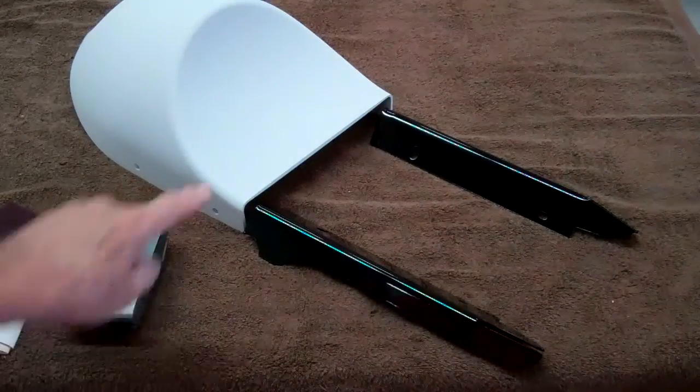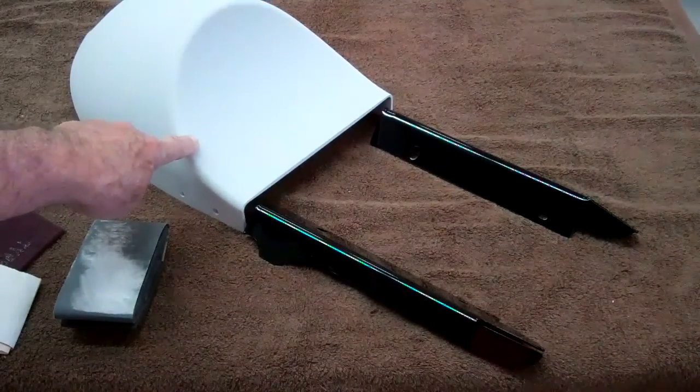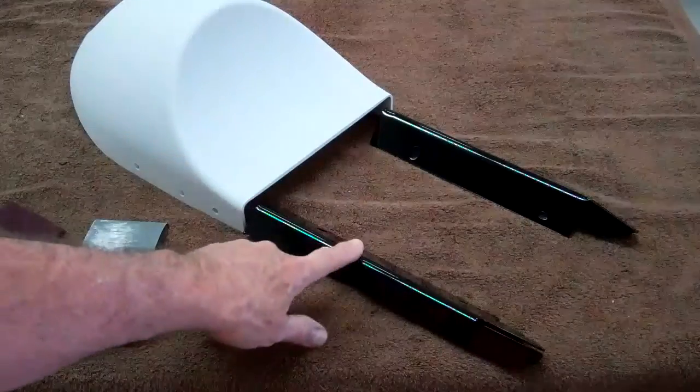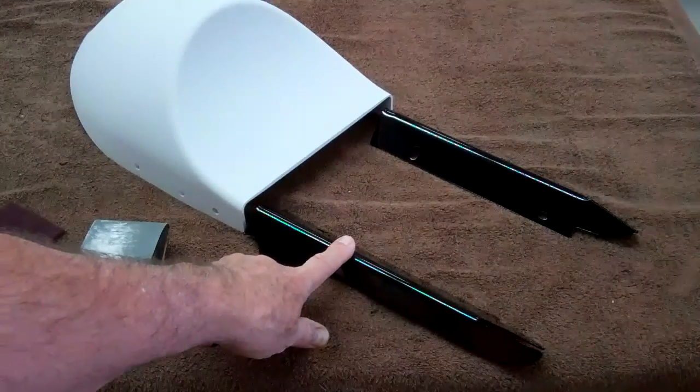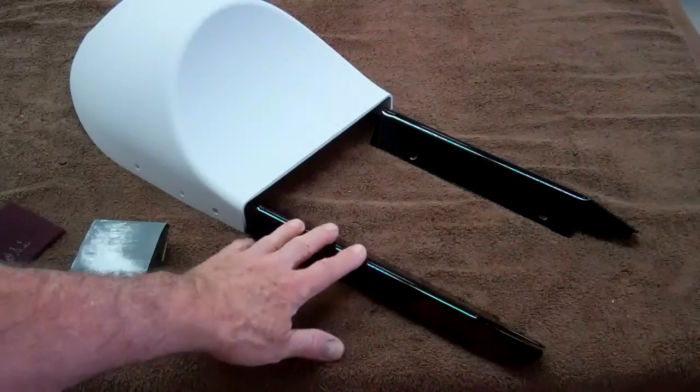One thing I found too, I rattle canned one of the bikes that we did. And the black that I used from the rattle can was a little more of a brown black than it was the true black that the powder is. So you may want to kind of shop around and find a good black that is actually black black like this.